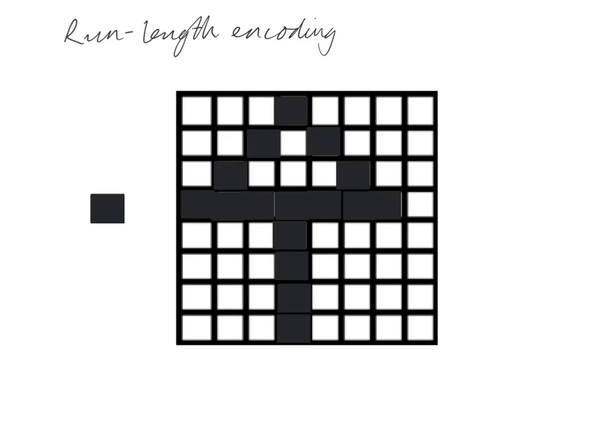So run-length encoding is another way of reducing file size. We'll just take this example of my arrow picture from a previous video. This image, if you remember, is a 1-bit image.